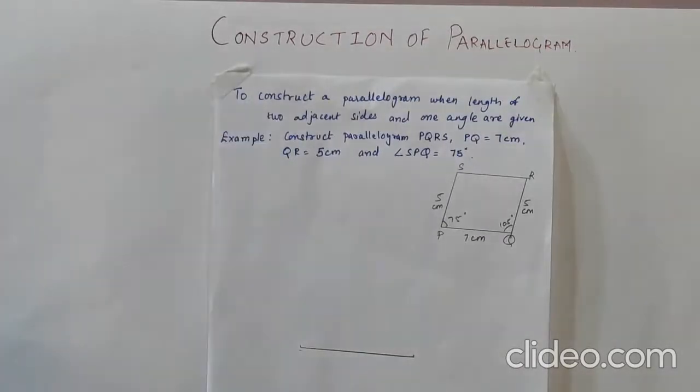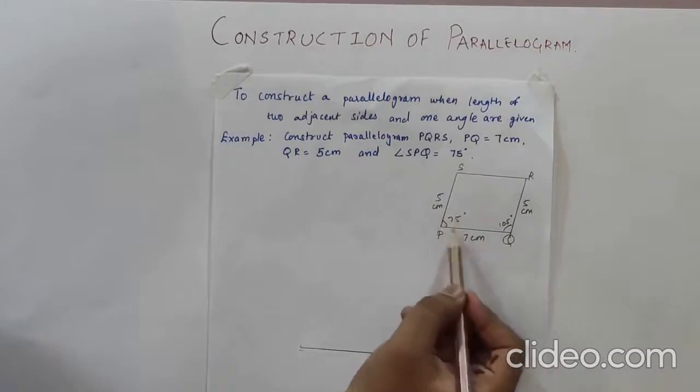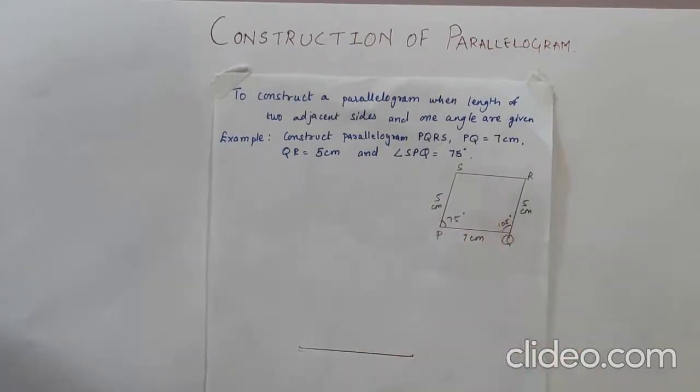Now the next type is to construct a parallelogram when length of two adjacent sides and one angle are given. So here we have PQRS, PQ is 7 cm, QR is 5 cm and angle SPQ is 75. Now we know that the adjacent angles in the parallelogram are supplementary. So if we subtract 75 from 180, we will get angle Q and that will be 105.